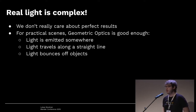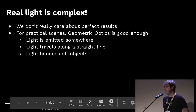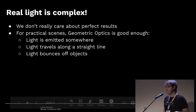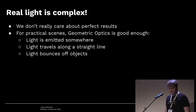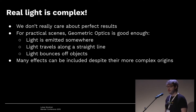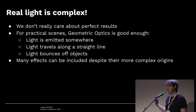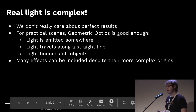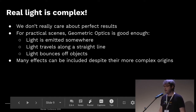Geometric optics is what you probably think of if you imagine how light works. The light starts somewhere at a light source, travels along a straight line, eventually hits something, bounces off, and moves around until it finally hits your eye or a camera. We can also include many effects geometric optics wouldn't normally predict — for example the Fresnel effect, or black body radiation — by just using derived formulas within the geometric optics framework.